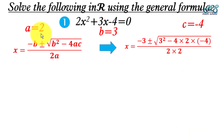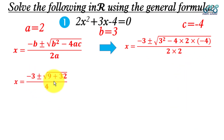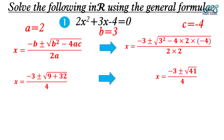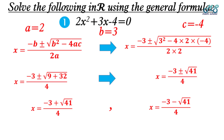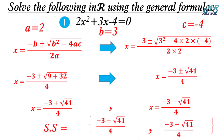Simplifying: x equals negative 3 plus or minus the square root of 9 plus 32, over 4. Since 9 plus 32 equals 41, we get x equals negative 3 plus or minus the square root of 41, over 4. The two solutions are x equals negative 3 plus root 41 over 4, and x equals negative 3 minus root 41 over 4.